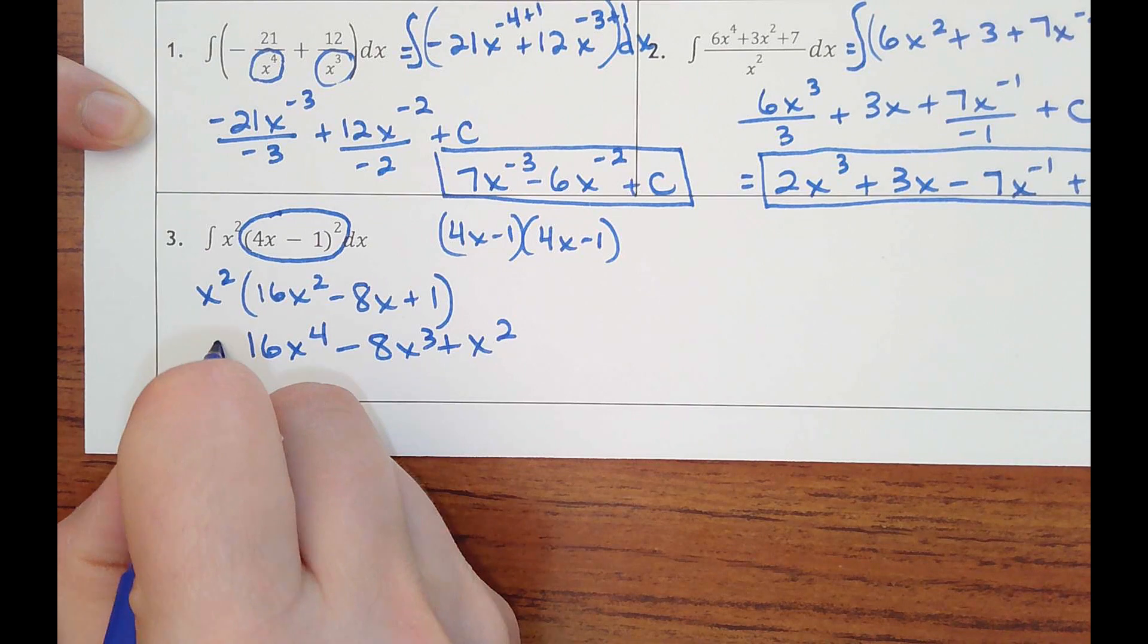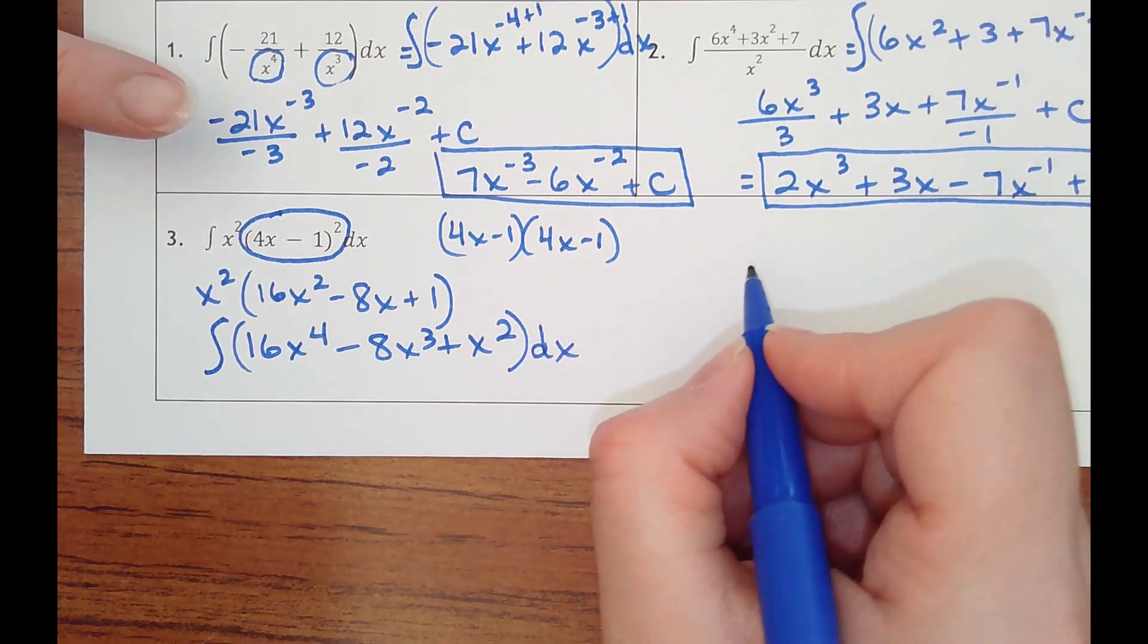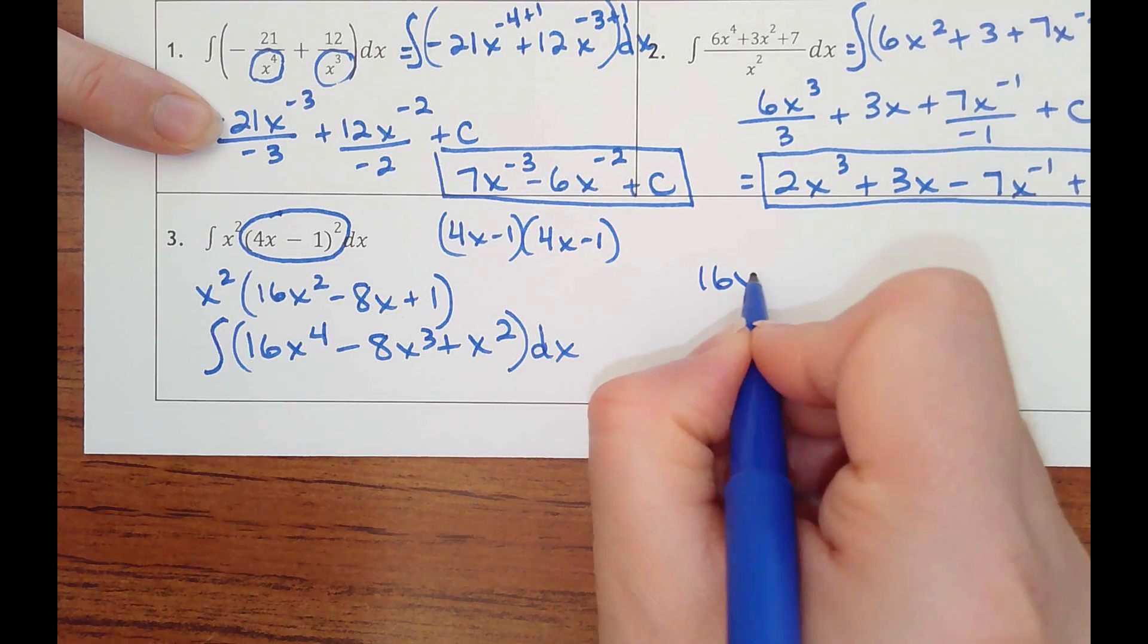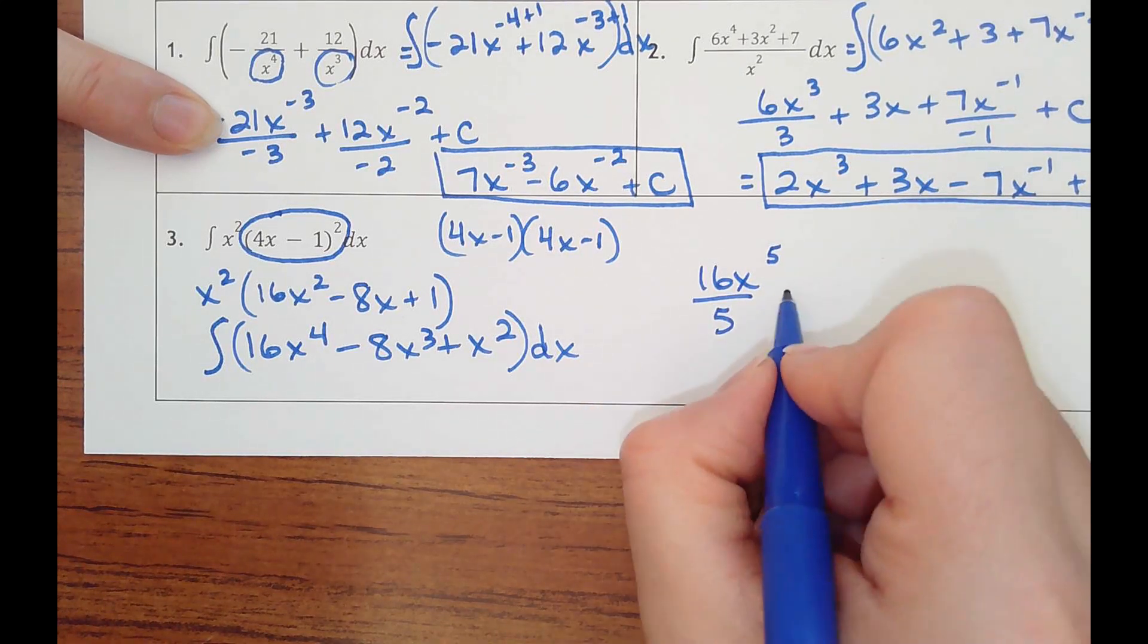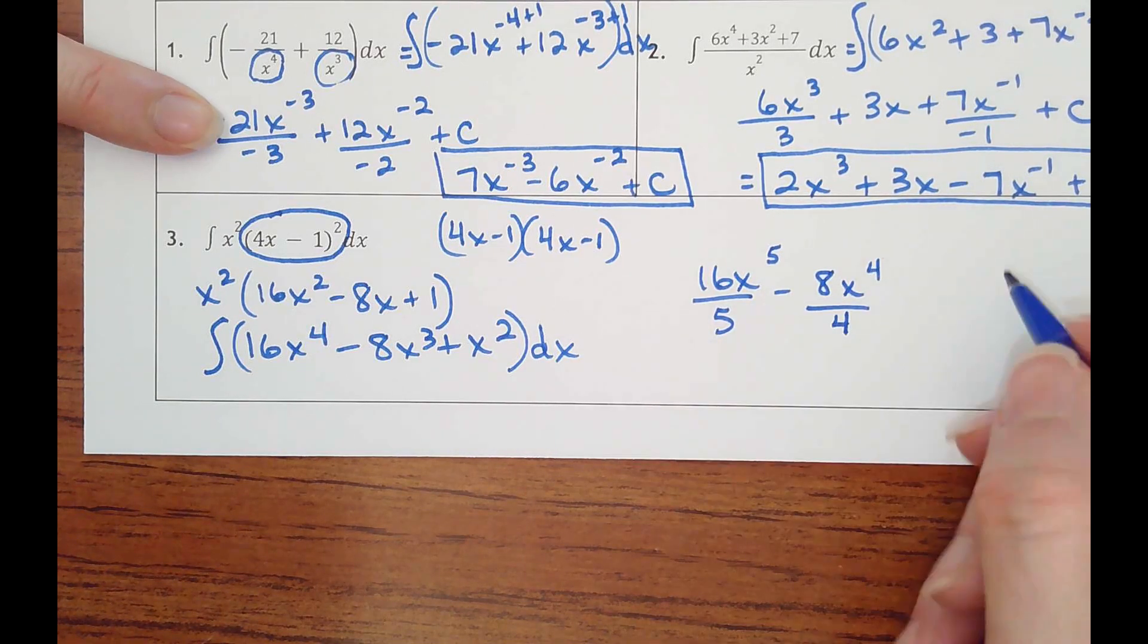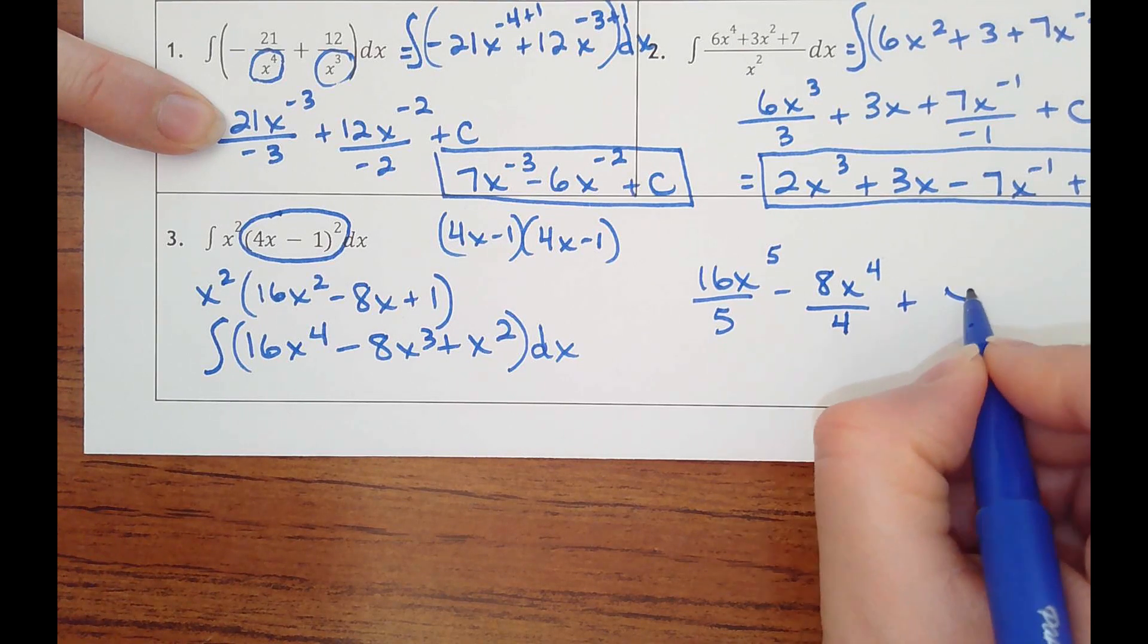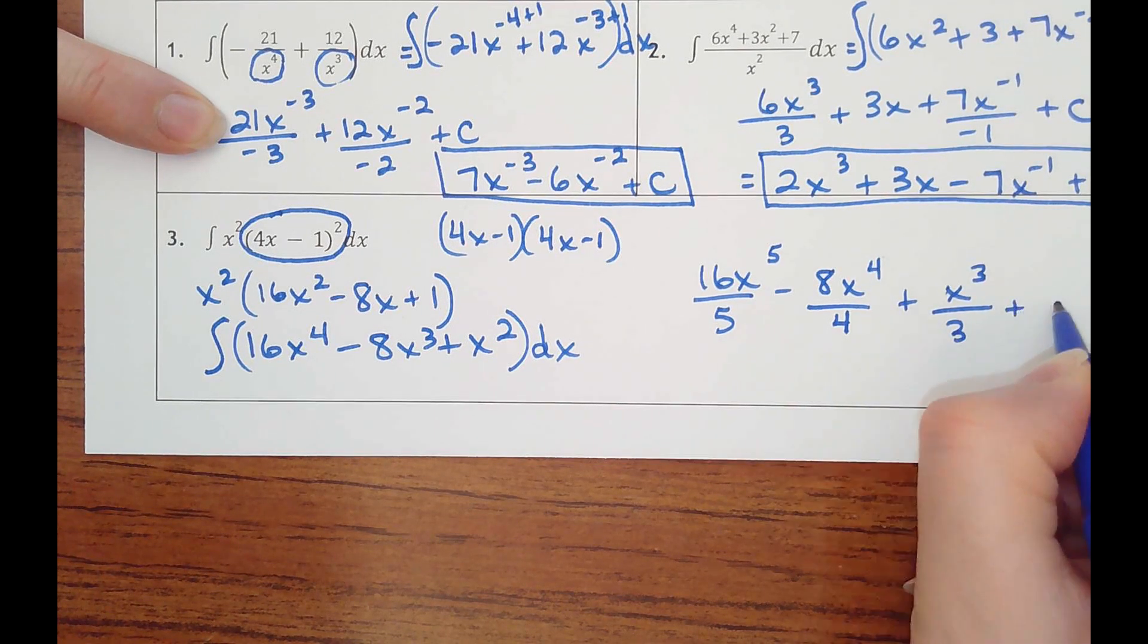That's my function. I want to anti-derive with respect to x. So I would get 16x to the 5th, divided by 5, minus 8x to the 4th, divided by 4, plus x cubed, divided by 3, plus c.